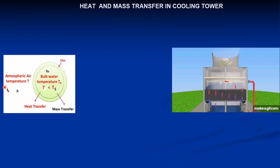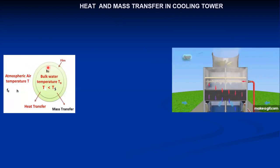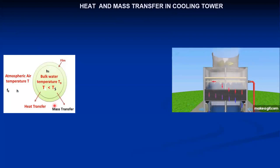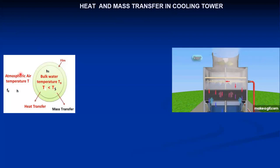Fg is the heat transfer coefficient of the air. H is the enthalpy of unsaturated air, and Hs is the enthalpy of saturated air — meaning when the air reaches that particular temperature and becomes saturated. Hs is generally obtained with the help of the water temperature at that particular instant. Obviously in the cooling tower, water temperature TS is greater than air temperature T, so TS is also equal to TW, the water temperature.